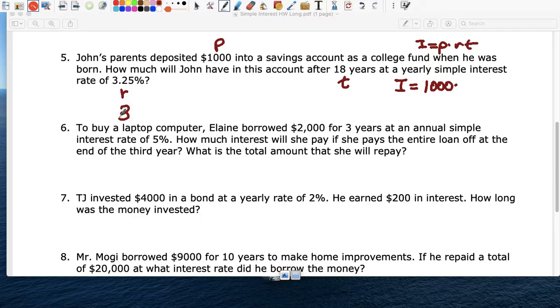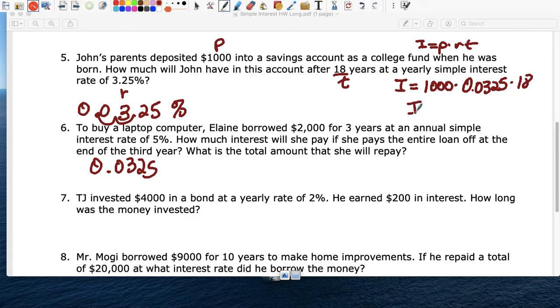So if you leave your money for 18 years, $1,000 for 18 years, how much money will you make? So I equals PRT. The rate is 3.25. So remember, we're going to change this. I'm going to move this 1, 2. It becomes 0.0325. So that's the rate. 0.0325. And T is 18 years. Let's see how much money John is going to have.